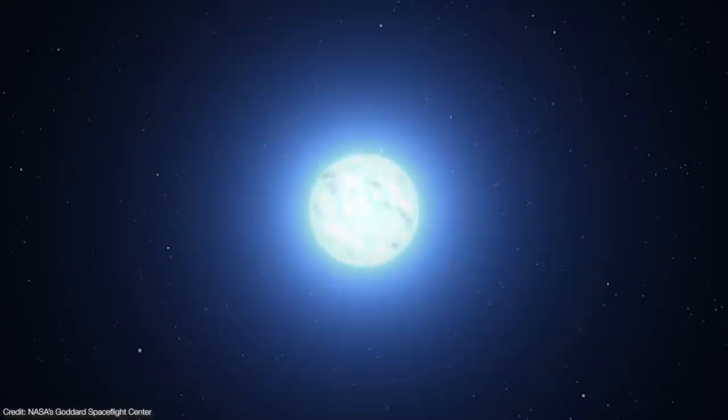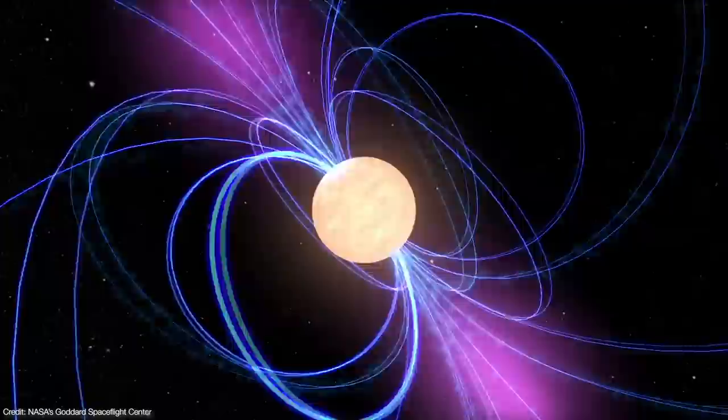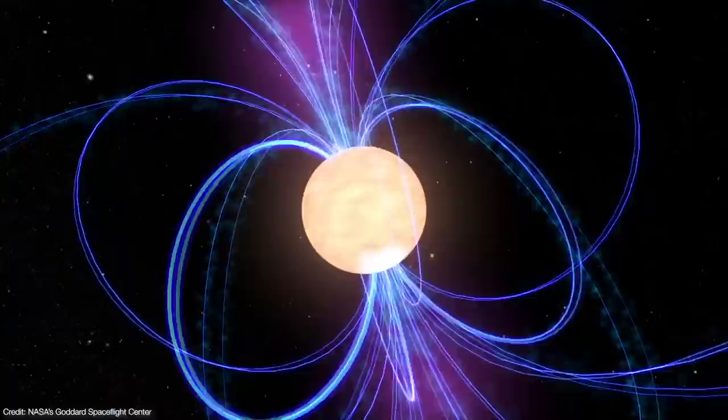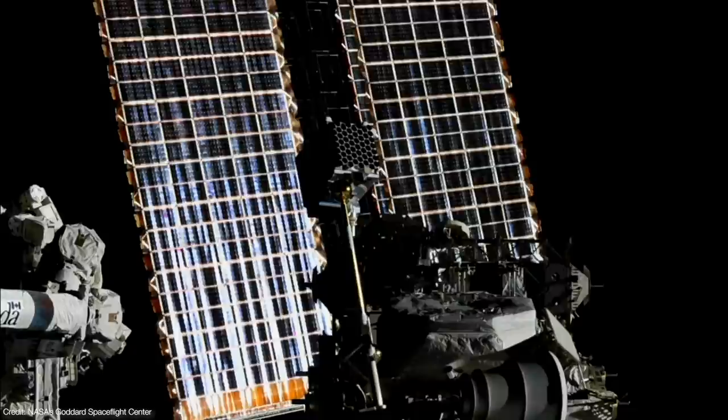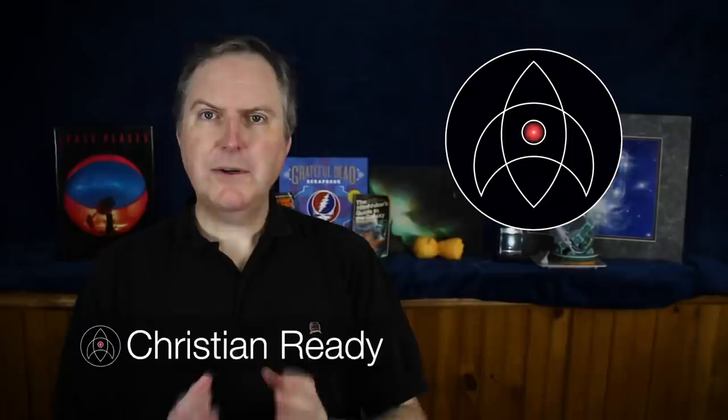Pulsars are the most energetic stellar objects in the universe. We think of them as cosmic lighthouses, sweeping twin beams of radiation as they rotate up to hundreds of times a second. These beams emerge from the magnetic poles, which are thought to lie in opposing hemispheres of the star. But astronomers using NASA's NICER telescope created the first ever maps of a pulsar 1100 light years away. They found that the magnetic fields of pulsars are even more strange than previously thought.